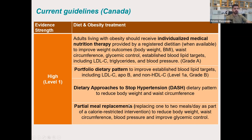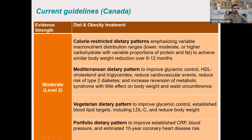We also have good evidence that the Portfolio diet pattern, the Dietary Approach to Stop Hypertension (DASH), and partial meal replacements are very good tools to help in the treatment of obesity. Specifically, the Portfolio diet could help improve blood lipids and various lipid targets, the DASH diet can help reduce body weight and waist circumference, and partial meal replacements — when one or two meals per day are replaced as part of a calorie-restricted intervention — have really good evidence to reduce body weight and waist circumference and also help with blood pressure and glycemic control.